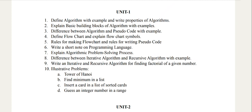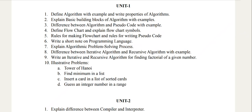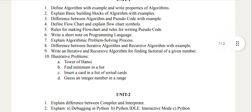Now: Define Algorithm with Example, Write Properties of Algorithm, Explain the basic building blocks of Algorithm with Examples, Difference between Algorithm and Pseudocode. Pseudocode with Example, Define Flowchart and Explain Flowchart Symbols — this is the fourth question. Write a short note on Problem Programming Language, Explain Algorithm Problem Solving Process.